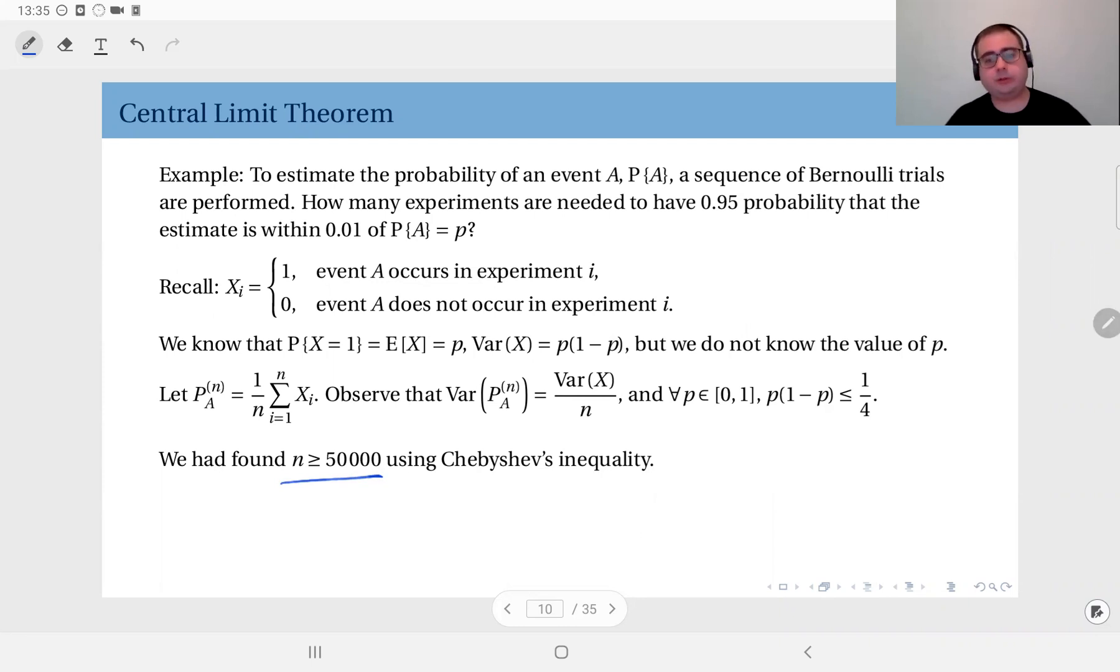The problem is we would like to estimate the probability of an event, and we would like that estimate to be within 0.01 of the true value with a probability of 95%. And we had modeled this with the Bernoulli sequence.